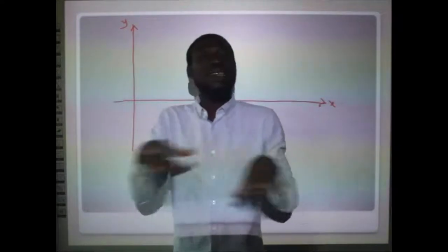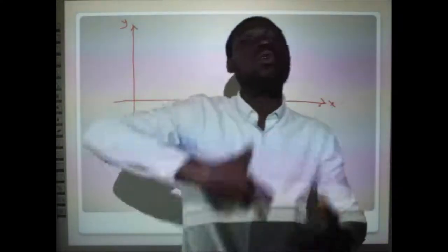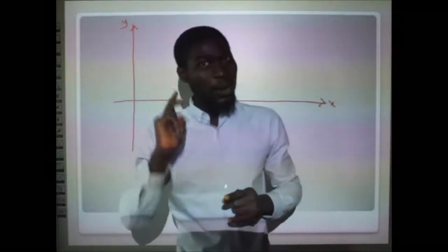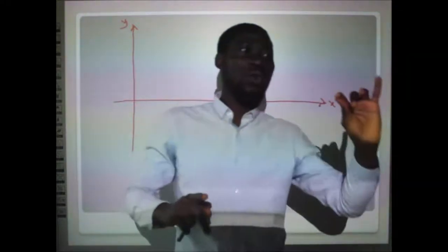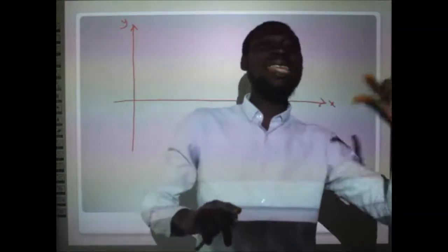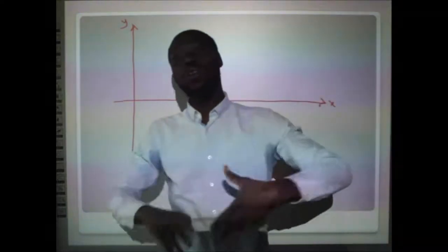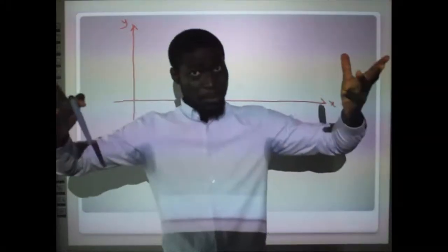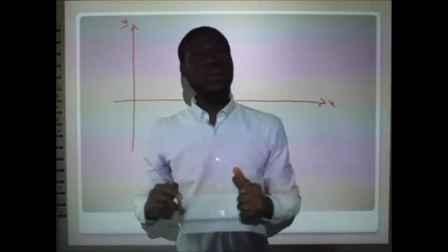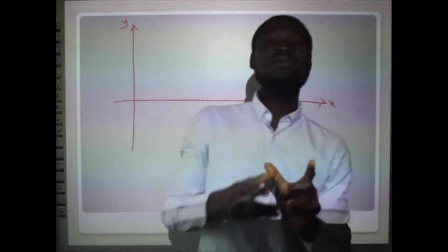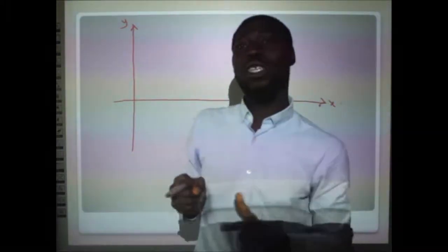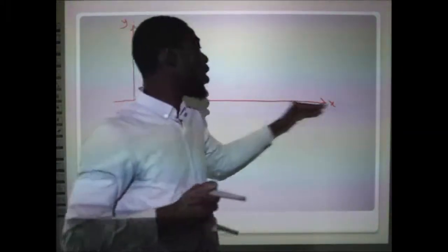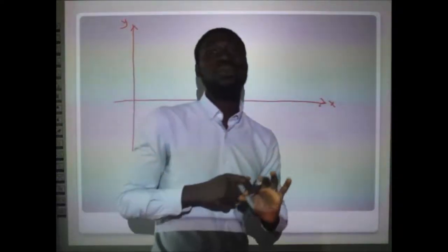We talk about coordinates: the x-coordinate, called the abscissa, and the y-coordinate, called the ordinate. These describe where an object is located on the x-y plane. We can attribute each plane — the x-plane and the y-plane — to one of the equations of motion to get the equation of trajectory. The equation we will use is S = ut + ½at², the third equation of motion.